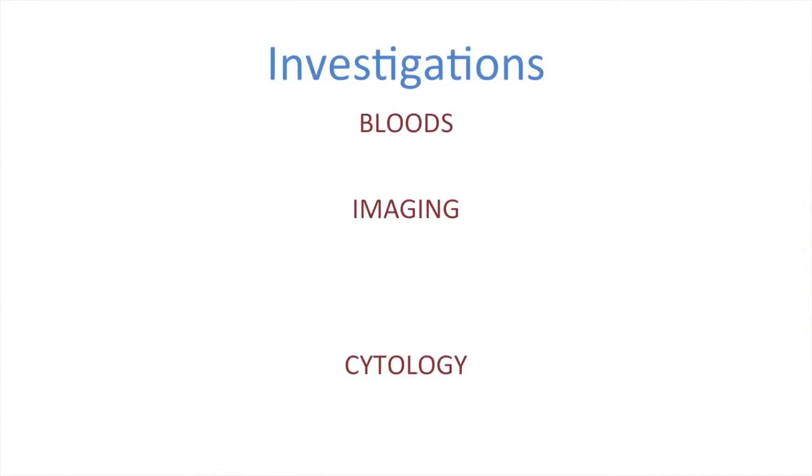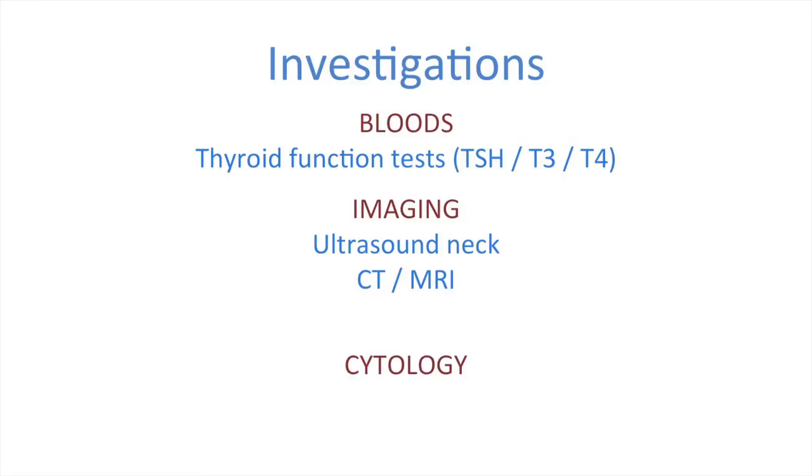When it comes to bloods, check the thyroid function tests. This may confirm a euthyroid patient. An ultrasound scan of the neck is a useful first line imaging modality to assess the goiter and to pick up any lymph nodes. A CT or MRI chest and neck can assess any intrathoracic extension of the thyroid and also see what effect it may be having on nearby structures.